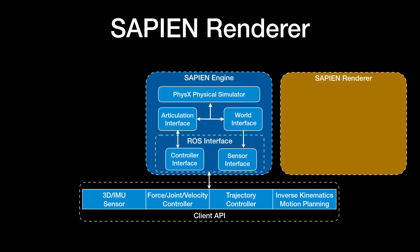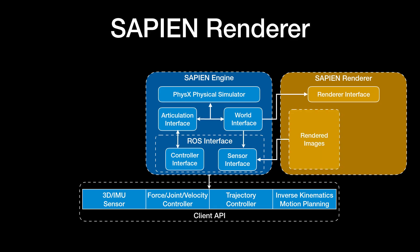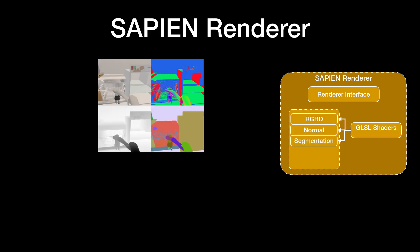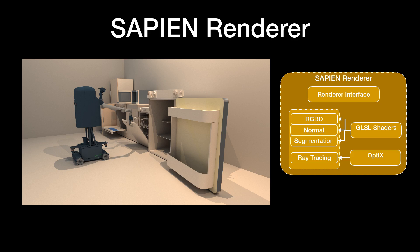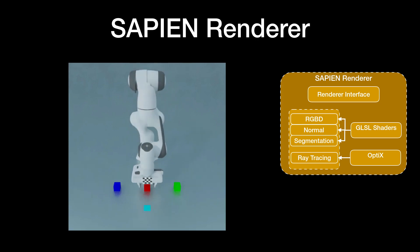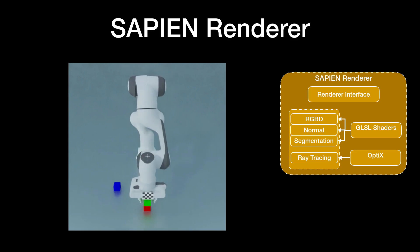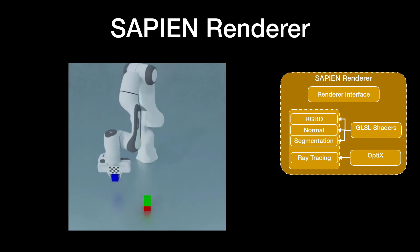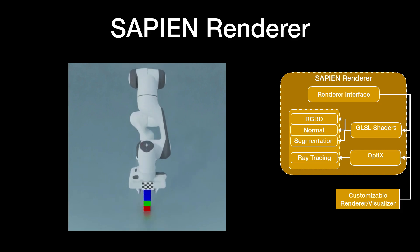Next, let's see how Sapien does the rendering. Sapien Renderer takes the raw information from Sapien Engine and generates images as sensor input. It supports multi-modality outputs, including RGB images, depth map, normal map, and part segmentation, through GLSL shaders. It also provides ray-traced rendering with the OptiX framework. The ray-traced rendering can support generating high-quality demos, such as the standard stacking task shown here. The shaders in Sapien Renderer can also be customized to suit special rendering needs.